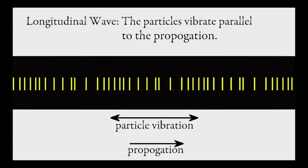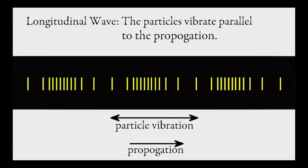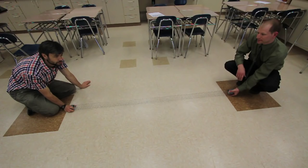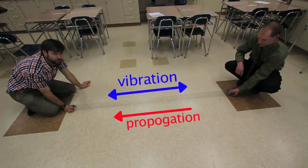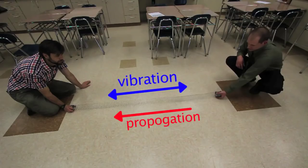Longitudinal waves are different from transverse waves in that the particles vibrate parallel to the propagation. Propagation is defined as the direction of energy travel in a wave. When Mr. Peterson produces a longitudinal wave, the displacement of the compressions is parallel to the propagation.